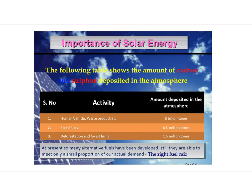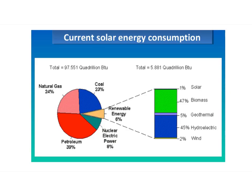In a developed country, GNP increases and energy consumption increases. In poor countries, GNP and energy consumption are less. There are two types of energy resources: (1) Renewable energy resources or non-conventional energy resources, and (2) Non-renewable energy resources or conventional energy resources.